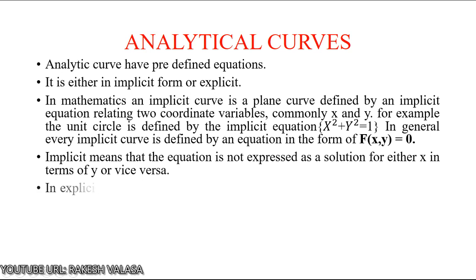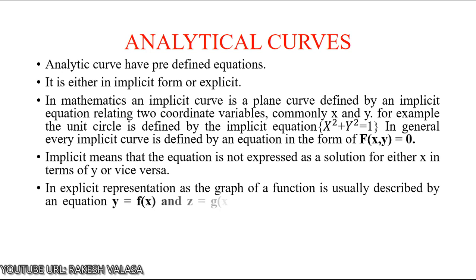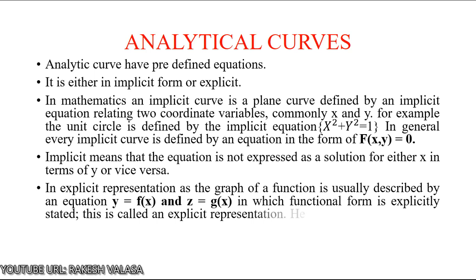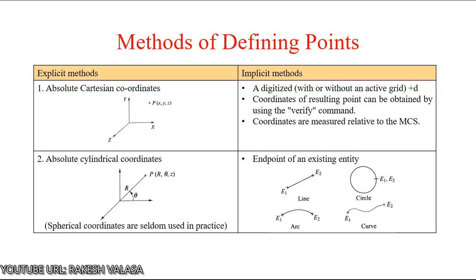These types of terms are expressed in explicit method. In explicit representation, the equation is described as y = f(x) and z = g(x), where y and z are represented in terms of x. If we represent in the form of f(x, y) = 0, this is called implicit representation. If we represent y = f(x) or z = g(x), this is called explicit representation. Let us discuss methods of defining points, defining lines, arcs and circles, and finally synthetic curves.